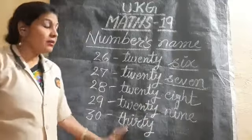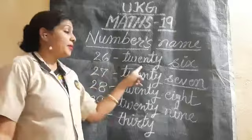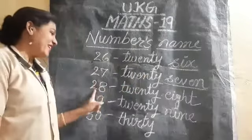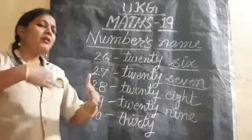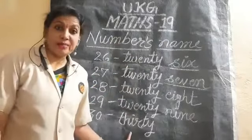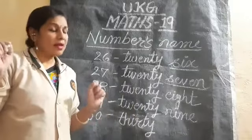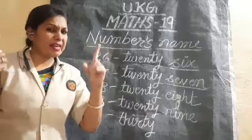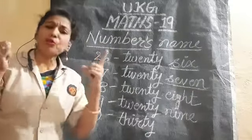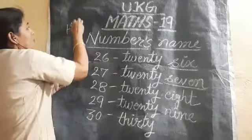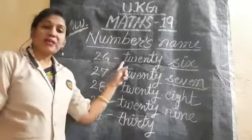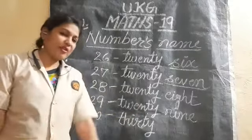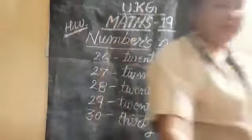It is completed — our numbers name lesson. In your copy, write each spelling one full page: one full page for 26, next page for 27, then 28, then 29, and last 30. Read and learn it, and write it with your hand. Do your work yourself — we have to become strong, brilliant, and excellent. Do your work yourself. Have a nice day. Thank you.